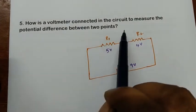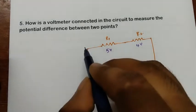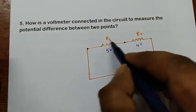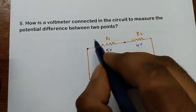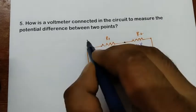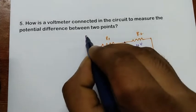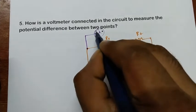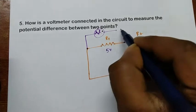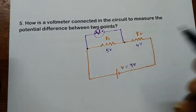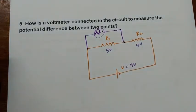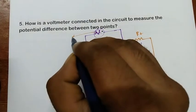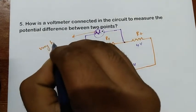Now, how is the voltmeter connected in a circuit to measure the potential difference between two points? Let me take these two points across resistance R1. I should connect the voltmeter in parallel only. The voltmeter must be connected in parallel — and it's important to understand why. Because the voltmeter offers very high resistance.